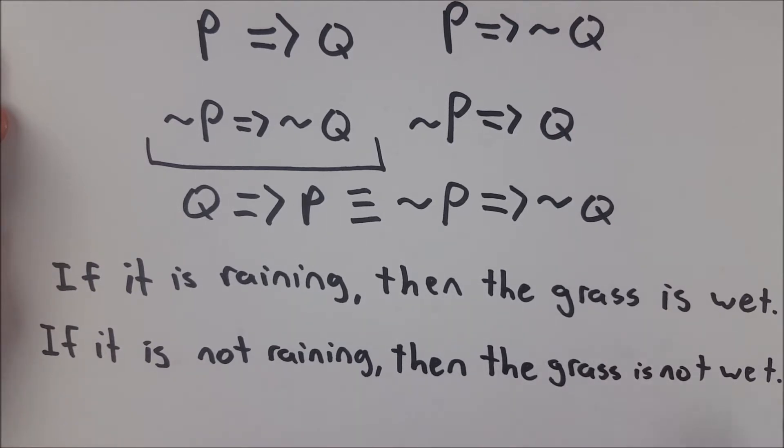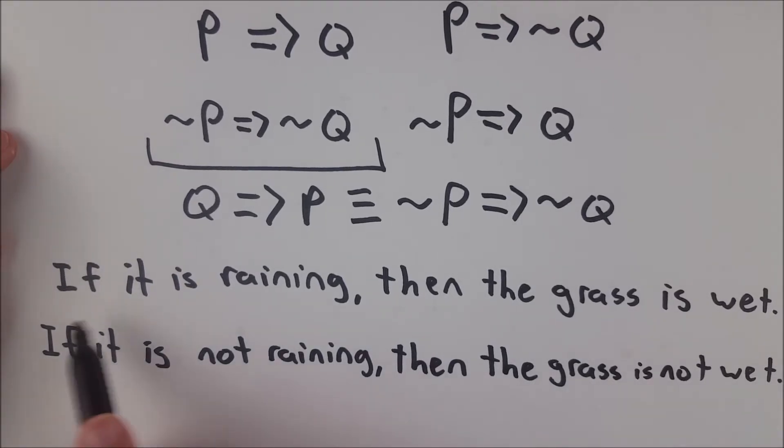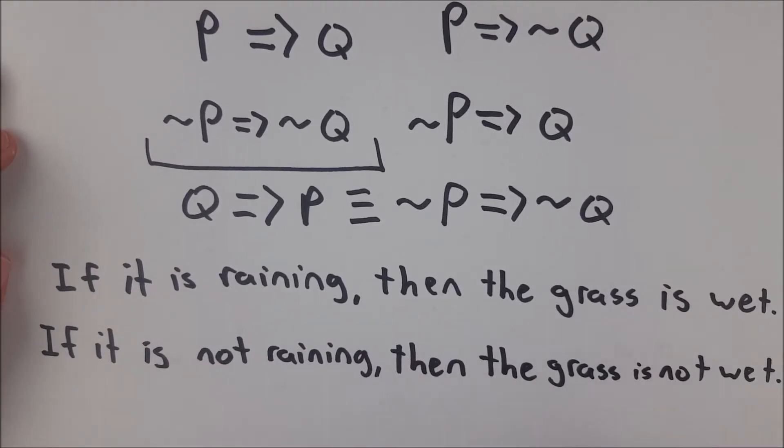And then the inverse, if it is not raining, then the grass is not wet. Well, this is not true. Because as soon as it stops raining, the grass will still be wet, even though it's not raining. So you can see that the inverse does not necessarily follow from the original statement.